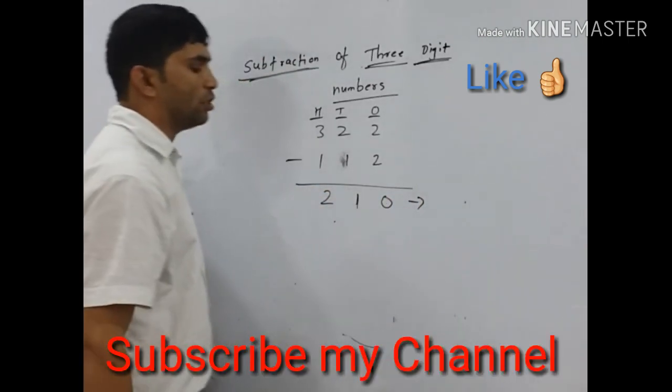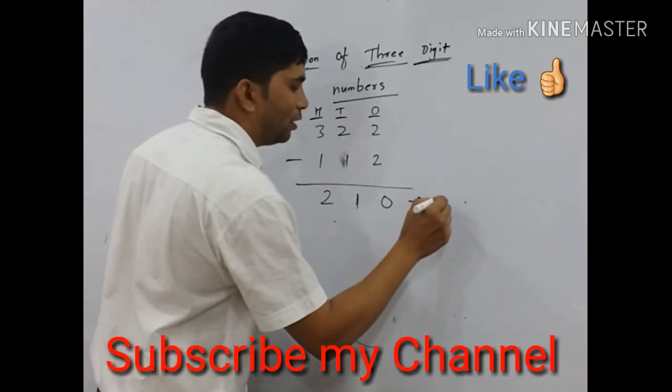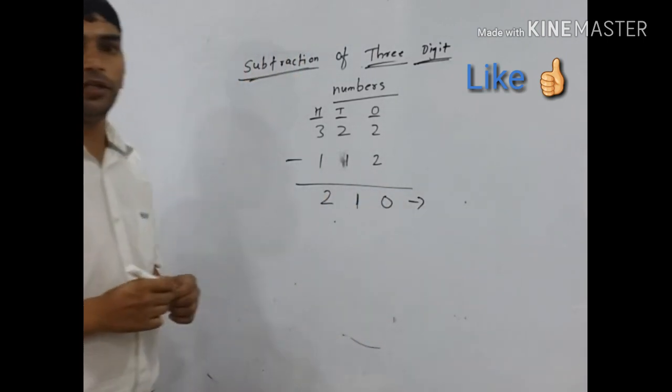We get answer 210 for three digit subtraction. Thank you.